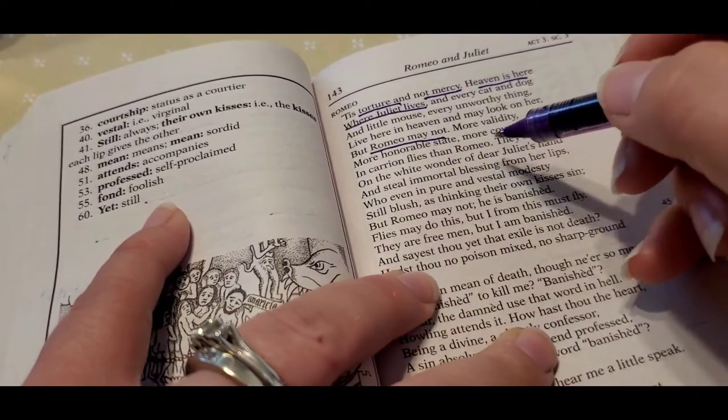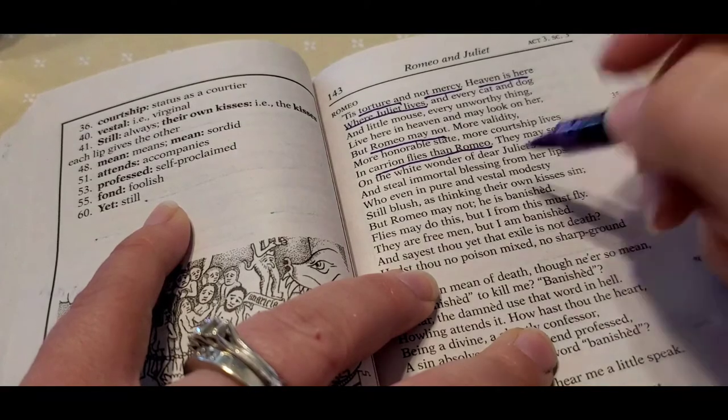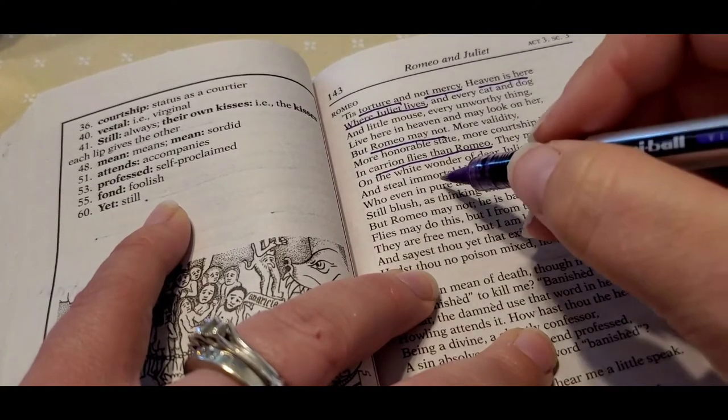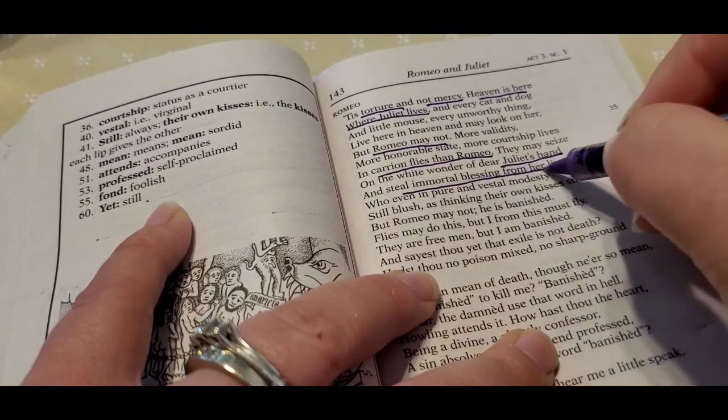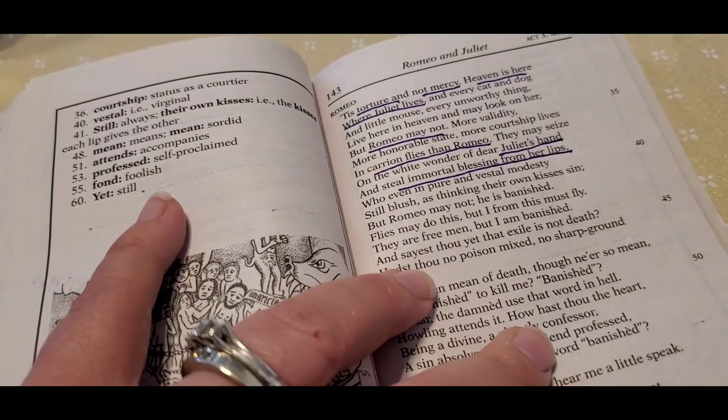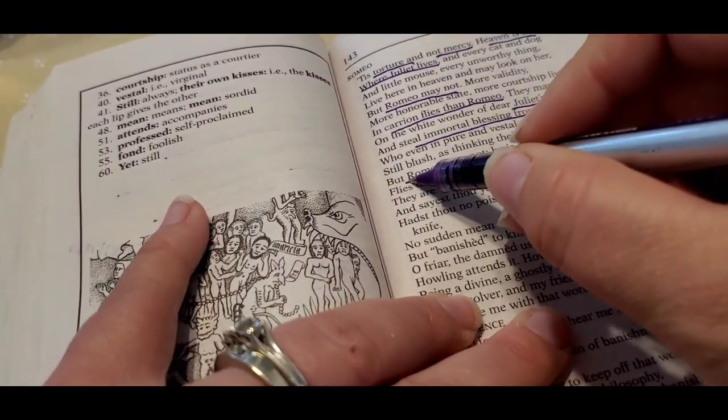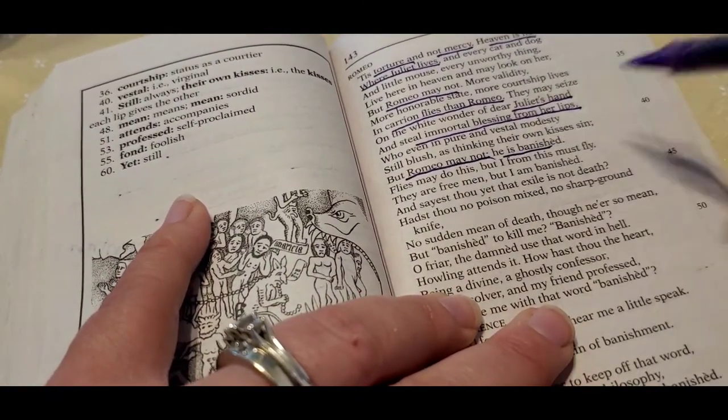And he goes, it's torture and not mercy. Heaven is here where Juliet lives. And every cat and dog, and they all can look upon her. But no, Romeo may not.